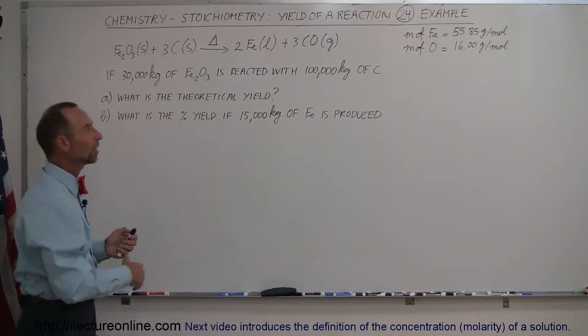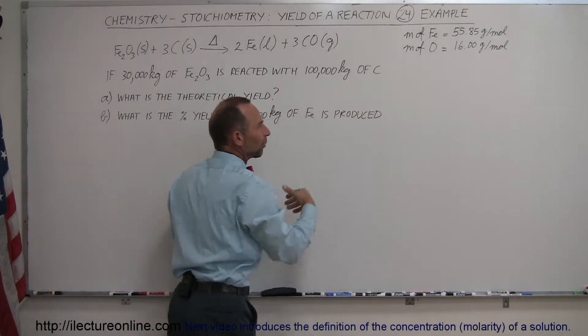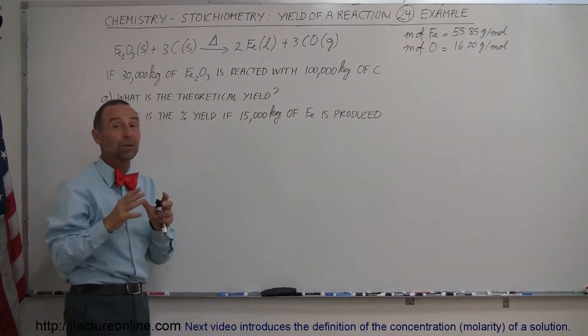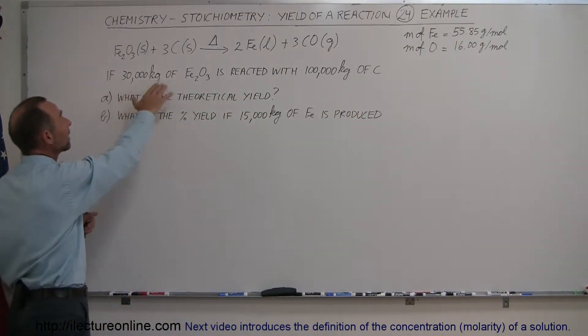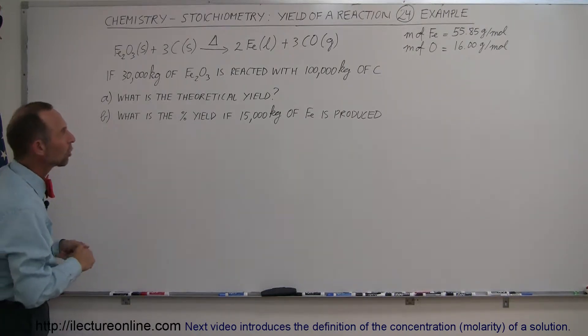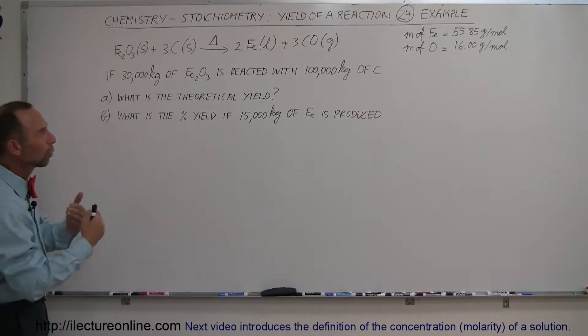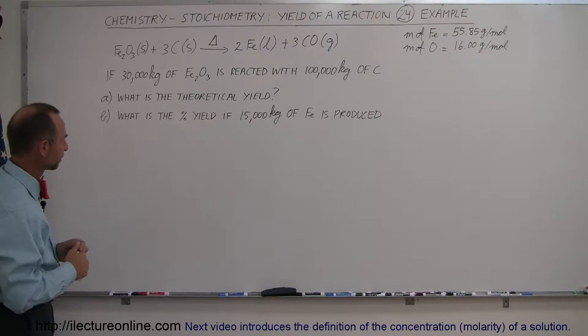We want to make sure there's no shortage of carbon. We don't want the reaction to be shortchanged so that we don't get all of the iron out, so we put plenty of coke — as we call it — or carbon into the mix.